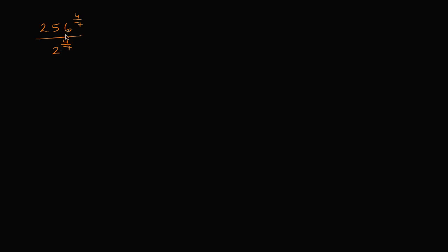The main property that might jump out at you is: if you have x to the a power over y to the a power, this is the same thing as x over y, to the a power. In our situation right over here, 256 would be x, two would be y, and a is four-sevenths.